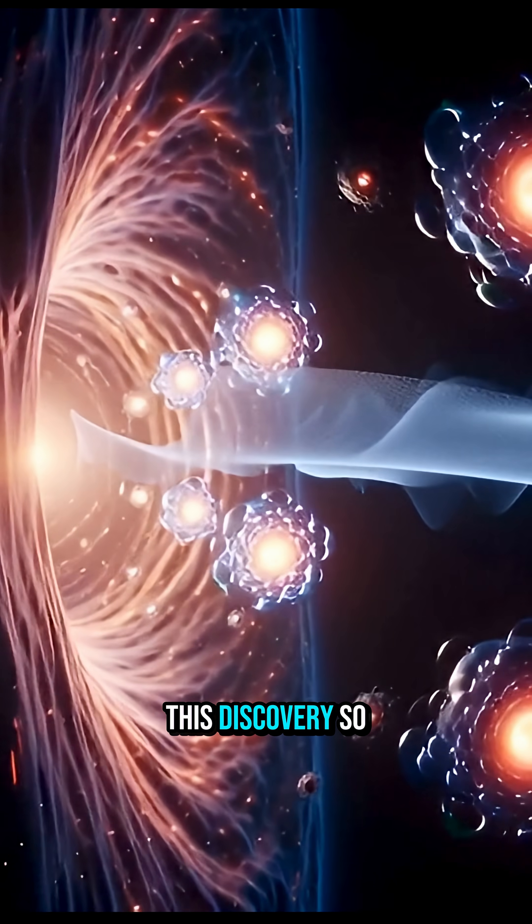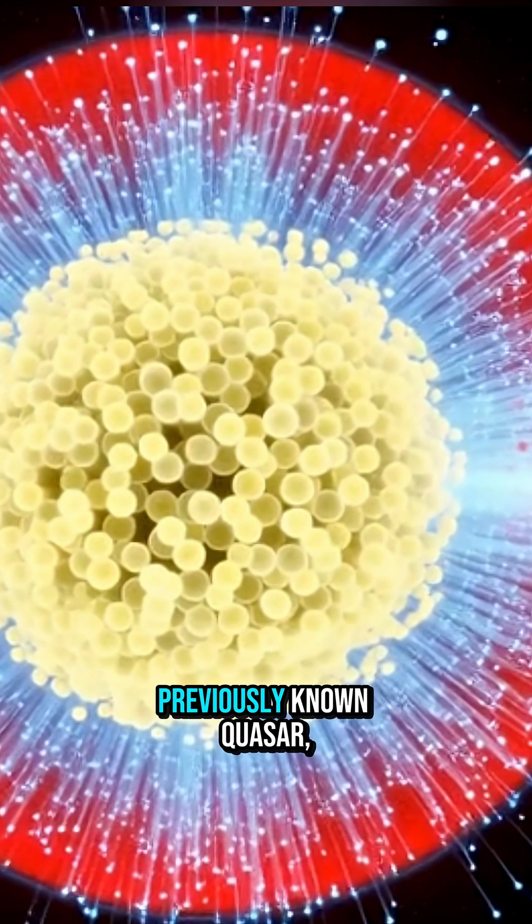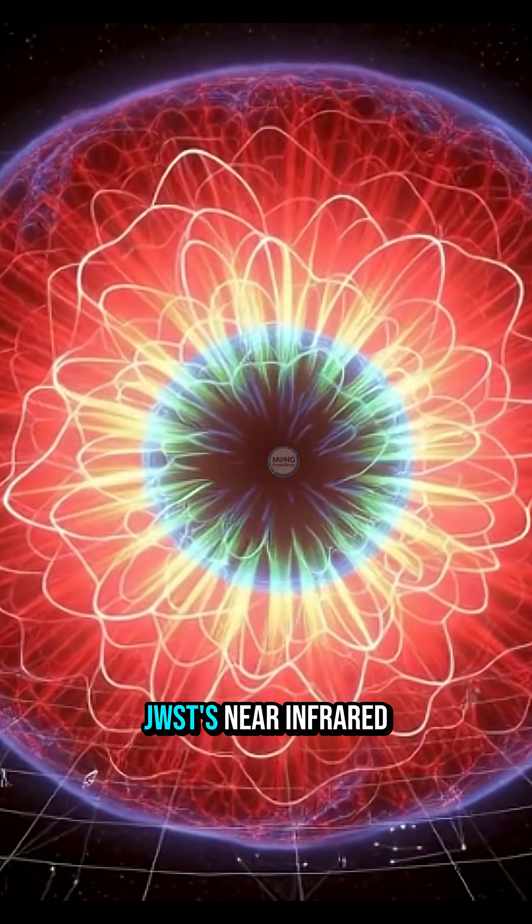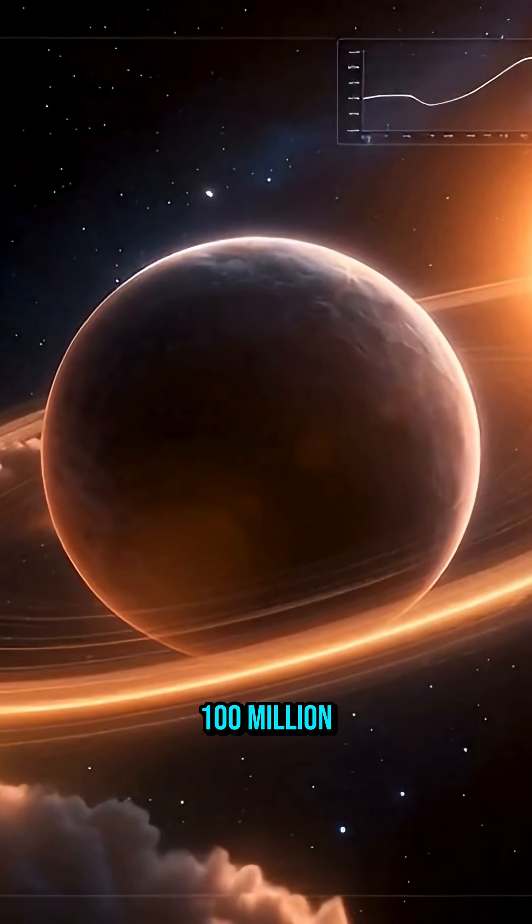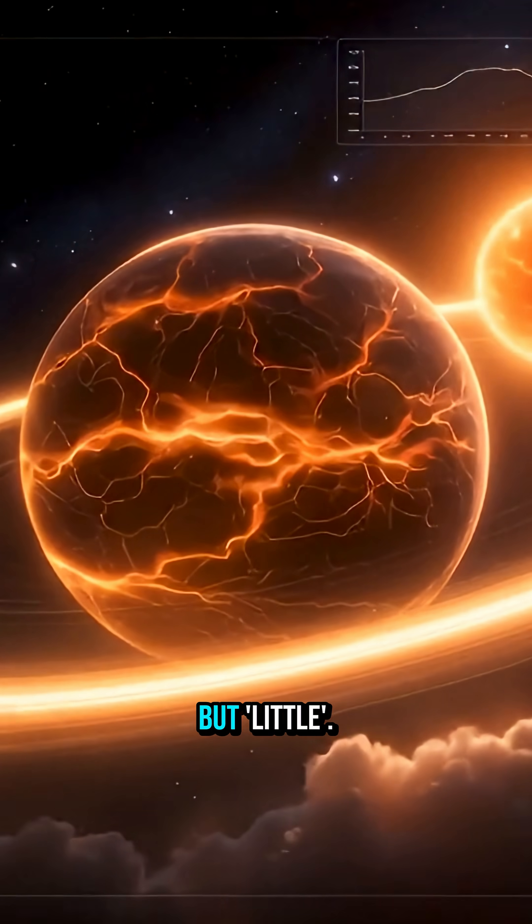Here's what makes this discovery so riveting. Bird sits in a region around a previously known quasar, yet it stood out in the infrared images thanks to the JWST's near-infrared camera. Its mass is estimated at roughly 100 million times the mass of our sun, making it anything but little.